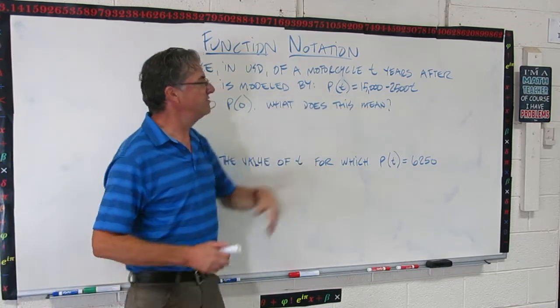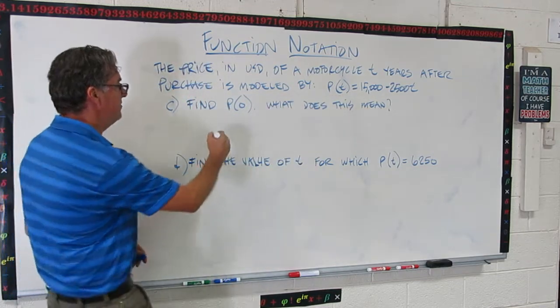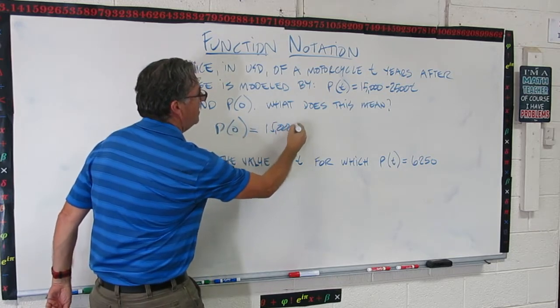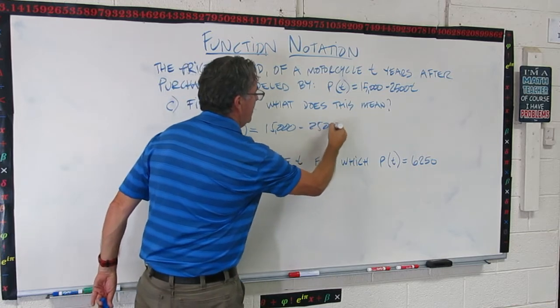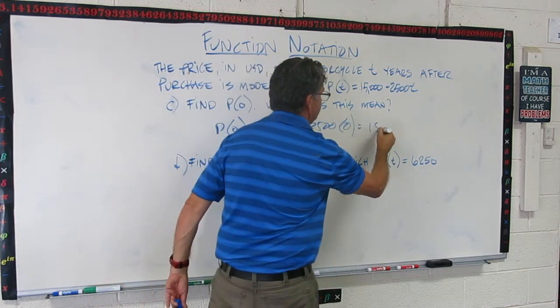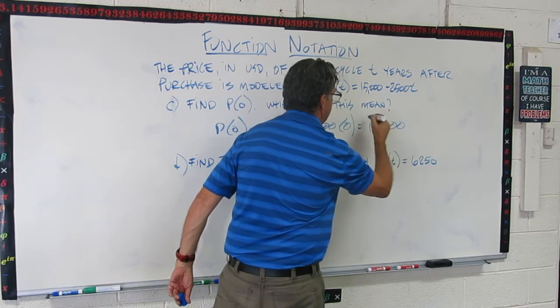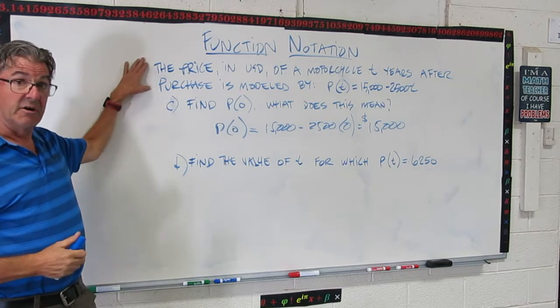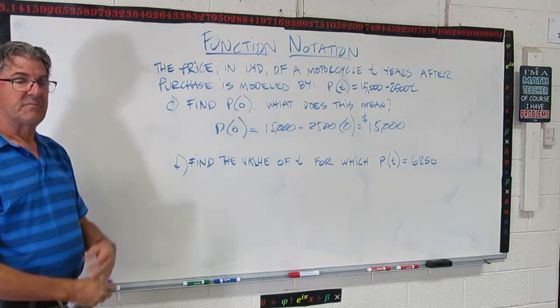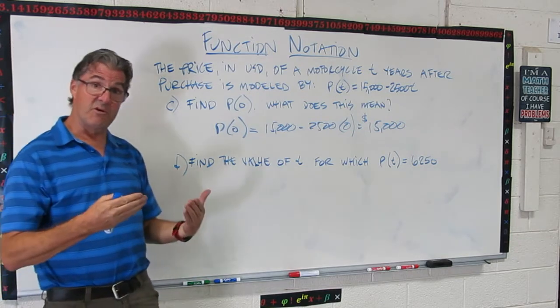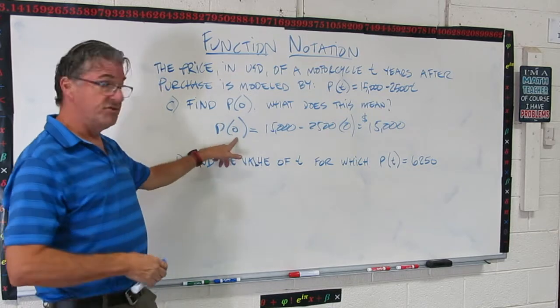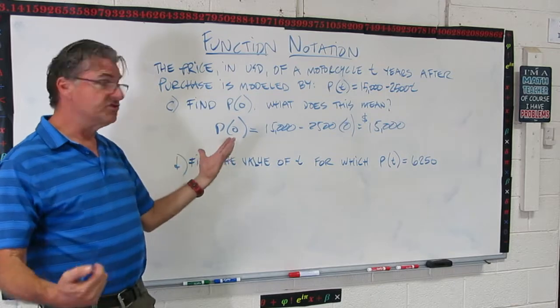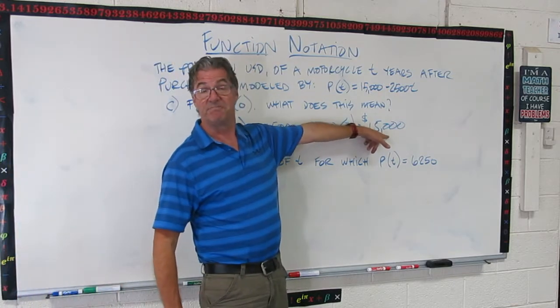So p(0) would be, in our notation, it'd be 15,000 - 2,500 × 0, which is just 15,000. So what does that mean? What does that, how is that number significant in our scenario? It's the price of the motorcycle when it's new. p(0), no time has gone by. So it's a brand new motorcycle. So if you walk into the showroom, this is what you're going to spend on that motorcycle.